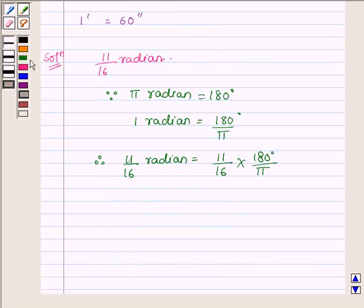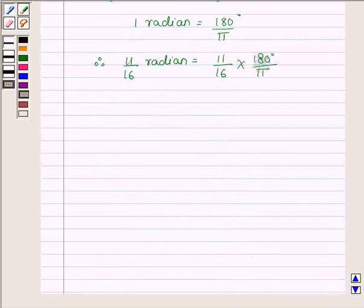And now since pi is equal to 22 upon 7, therefore we have 11 upon 16 into 180 degrees upon 22 into 7, which is further equal to 3465 upon 88 degrees.